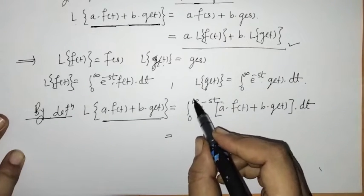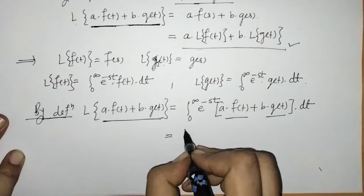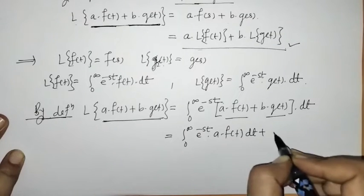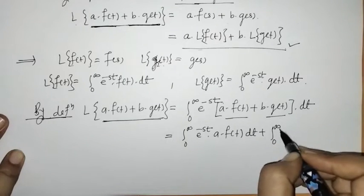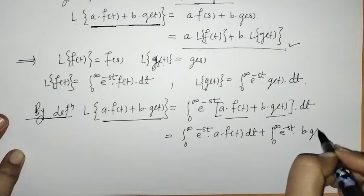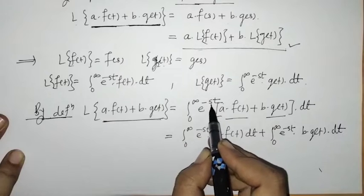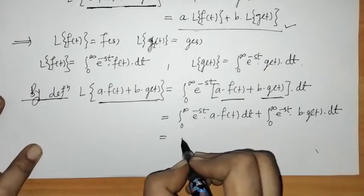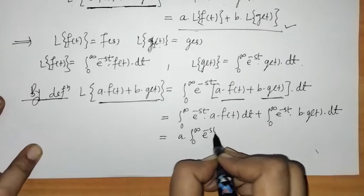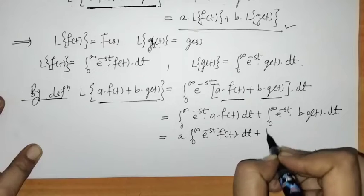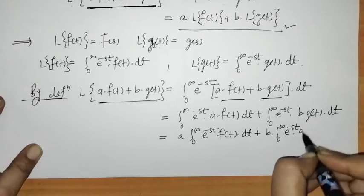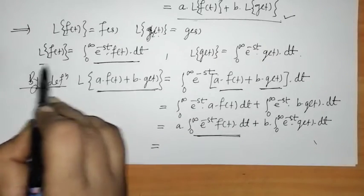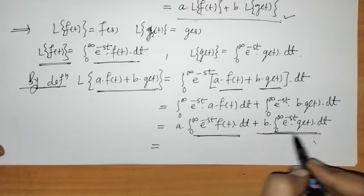We apply the integral of e^(−st) to the full function a·f(t) + b·g(t). We can separately apply the integral to each term, giving us the integral of e^(−st)·a·f(t) dt plus the integral of e^(−st)·b·g(t) dt. Since a and b are constants with respect to t, we can take them outside the integrals. We then recognize that each remaining integral is exactly the definition of the Laplace transform: one is the Laplace of f(t) and the other is the Laplace of g(t).